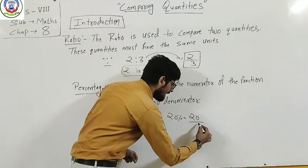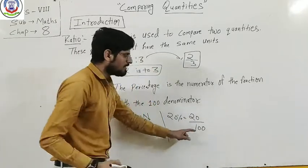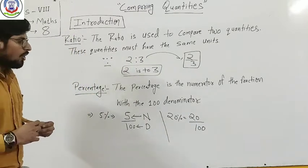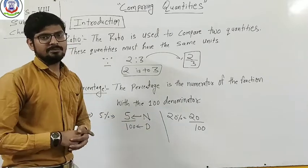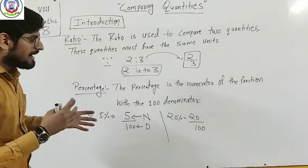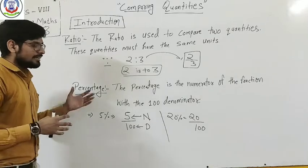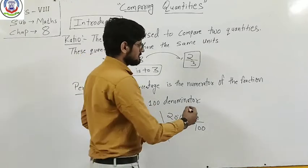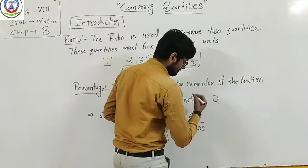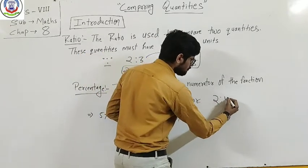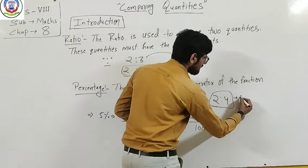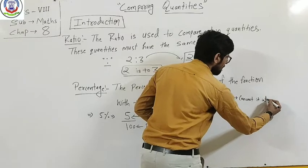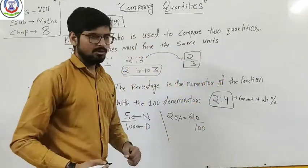Always, your denominator converts to 100. Suppose I have a ratio 2 is to 4. I need to convert it into percentage. Percentage's symbol is percent.